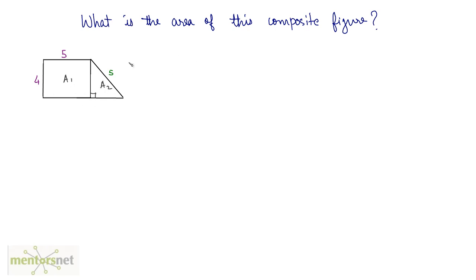First let us calculate the area of the rectangle. The area of a rectangle is length times breadth, which is 5 times 4, and that will be 20 square units. Now we need to calculate the area of the triangle. The area of a triangle is equal to half into base into height. This is a right-angle triangle, so the perpendicular side will be the height, which is 4.